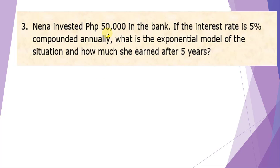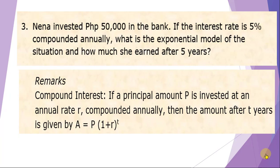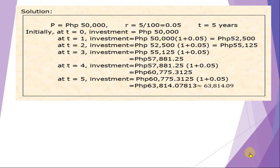Problem number three: Nena invested 50,000 in the bank. If the interest rate is 5% compounded annually, what is the exponential model for the situation and how much did Nena earn after five years? Remark: If a principal amount P is invested at annual rate r compounded annually, the amount after t years is A equals P times (1 + r) raised to t. The amount invested is 50,000 with a rate of 5%, converted to decimal form 0.05.